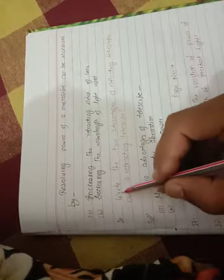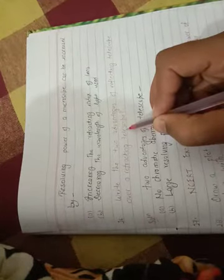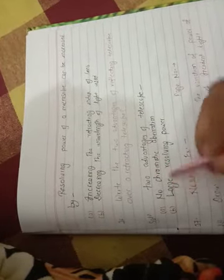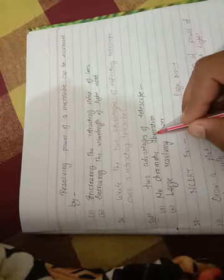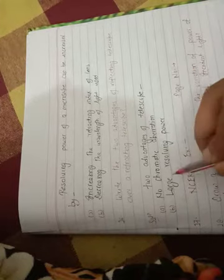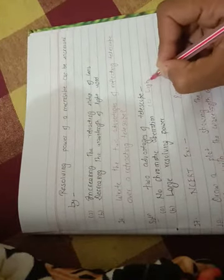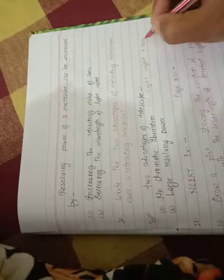Next question: Write two advantages of reflecting telescope over refracting telescope. The two advantages are: first, no chromatic aberration in reflecting type; second, large resolving power. One more point you can mention: light weight, it is very light and easy to carry. You can mention any of these three points in exam.